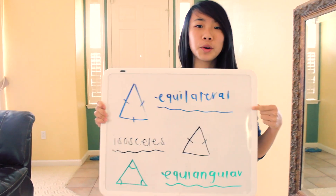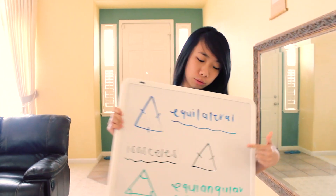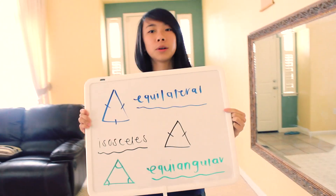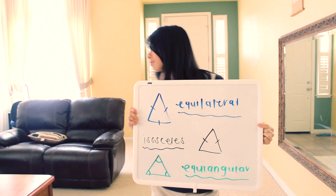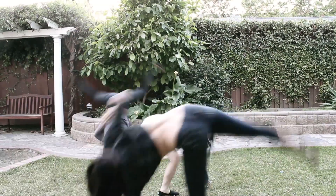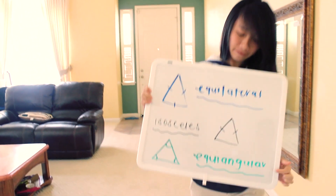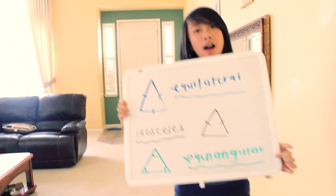When no sides are congruent, then it is scalene. Three sides are congruent, it's equilateral. Two sides are congruent, then it is isosceles.